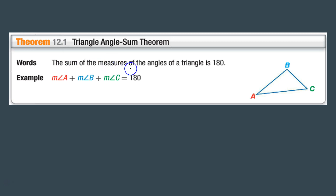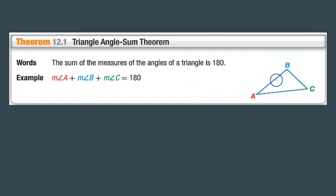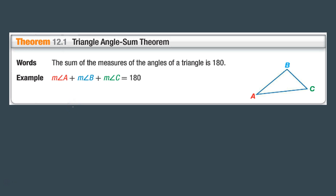Let's go over the Triangle Angle Sum Theorem. The sum of the measures of the angles of a triangle is 180 degrees. For example, the measure of angle A plus the measure of angle B plus the measure of angle C will always equal 180 degrees. That works for any triangle — all triangles add up to 180 degrees.